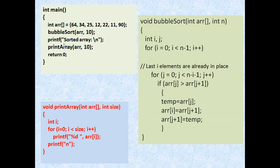Let's move to this example. We have taken an array ARR and initialized it with some basic elements. Then, on the next line, I am calling the bubble sort function passing two arguments: one is the name of the array ARR, and the second is the size. When we pass ARR, the address of the very first element, ARR[0]'s address, is passed to the function. The variable int n will hold the total number of elements.